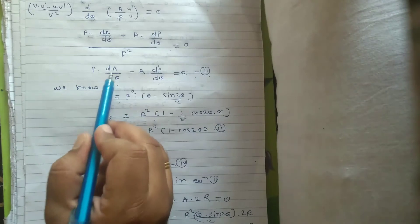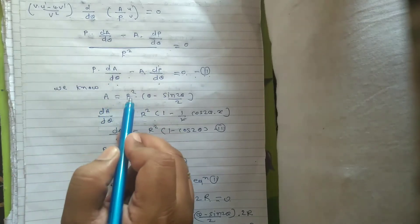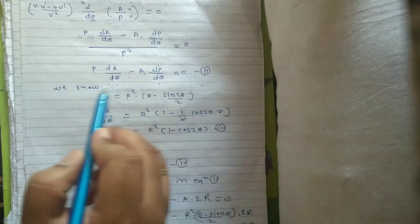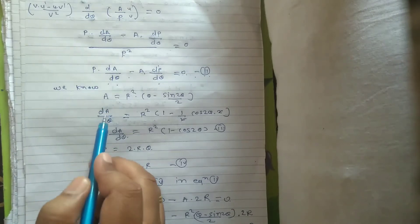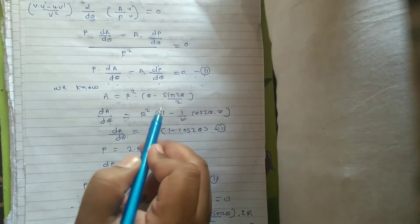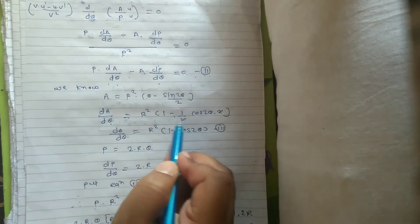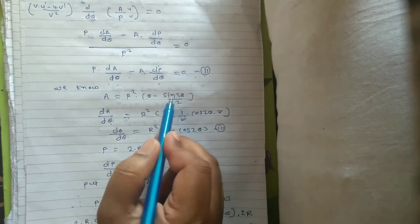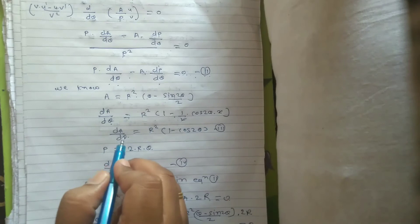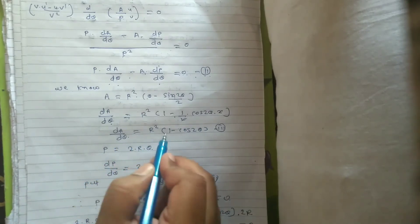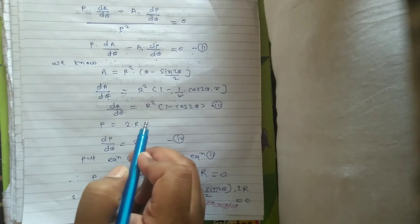Now we need to find dA/dθ and dP/dθ. We know area A = r²(θ − sin2θ/2). Taking the derivative with respect to θ: dA/dθ = r² into bracket (1 − (1/2)·cos2θ·2), so the 2s cancel. Therefore dA/dθ = r²(1 − cos2θ). This is equation number 3.